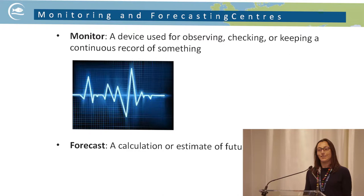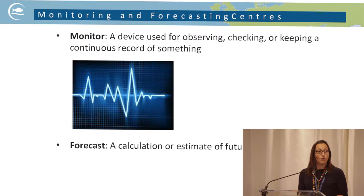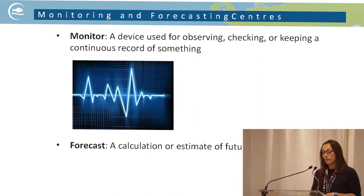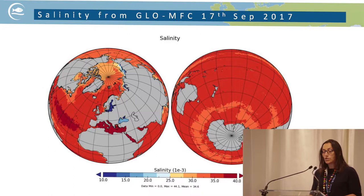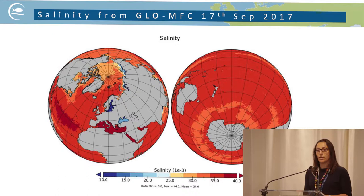Forecast is much more easy to understand in this community — it is what we provide in terms of future evolution of the sea. All our systems provide from five to ten days of forecast. Keeping this in mind, we have global ocean systems covering all the oceans, and regional systems covering all the European regional seas.